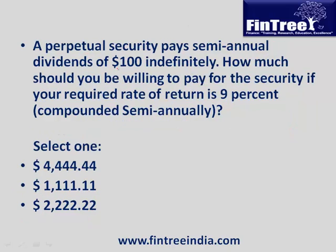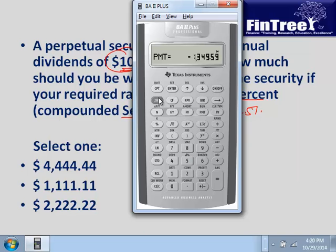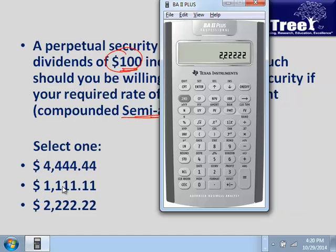A perpetual security pays semi-annual dividends of $100 indefinitely. How much should you be willing to pay if the required rate of return is 9% compounded semi-annually? Since compounding is semi-annual, the rate per six-month period is 4.5%. The value of the perpetuity is cash flow divided by the appropriate rate: 100 divided by 4.5% equals $2,222.